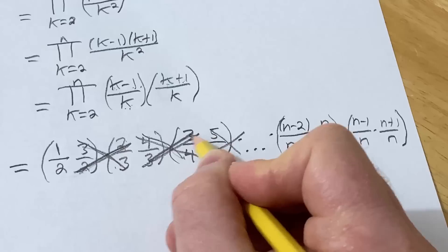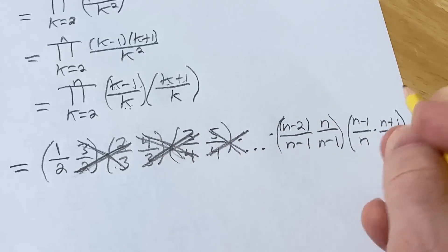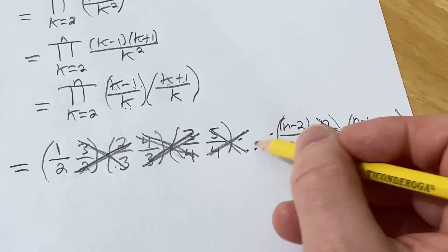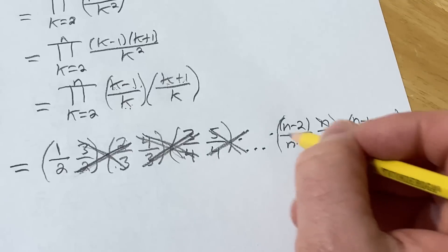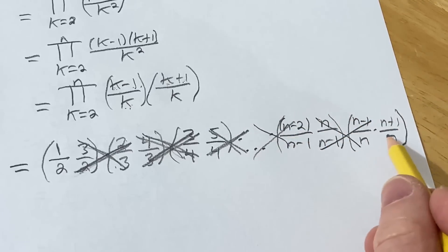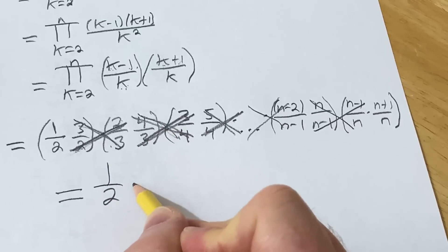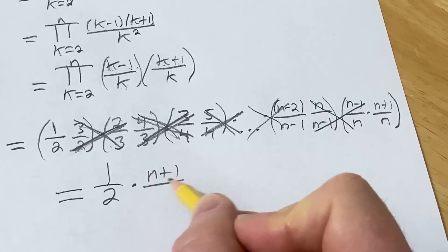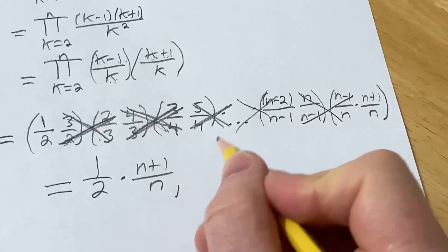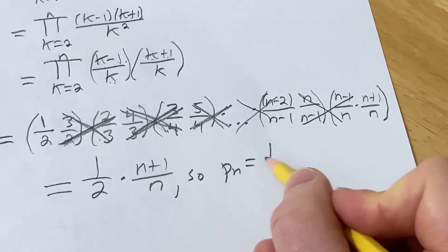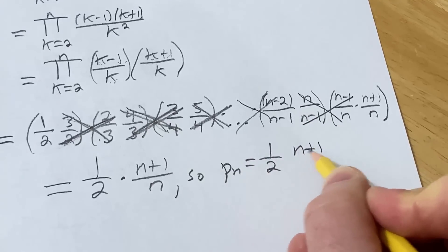And then this one will cancel with this one. And these are going to cancel with the ones over here. Right. So these will also go away. So then we're just left with one half times and then n over n plus 1. So sorry n plus 1 over n. Misspoke. So p_n is equal to 1/2 times (n+1)/n.